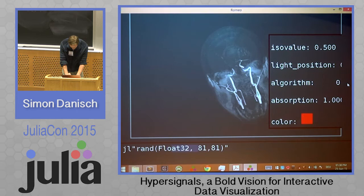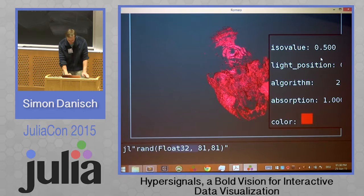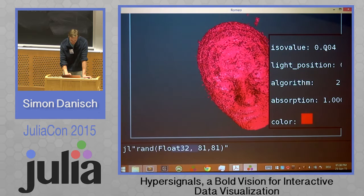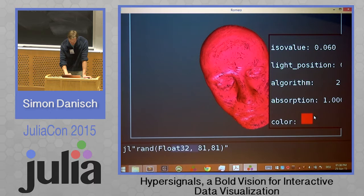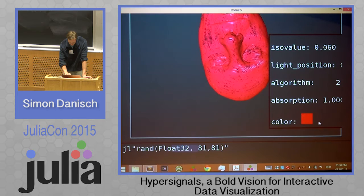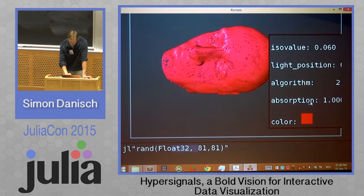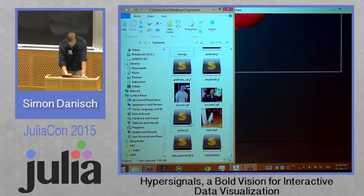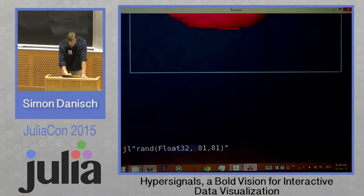The widgets are really rough yet. You could step through the ISO values of the surface of the volume like this. You can change the color of it. Yeah, it's a really rough prototype right now. I think that's about it for the messenger.